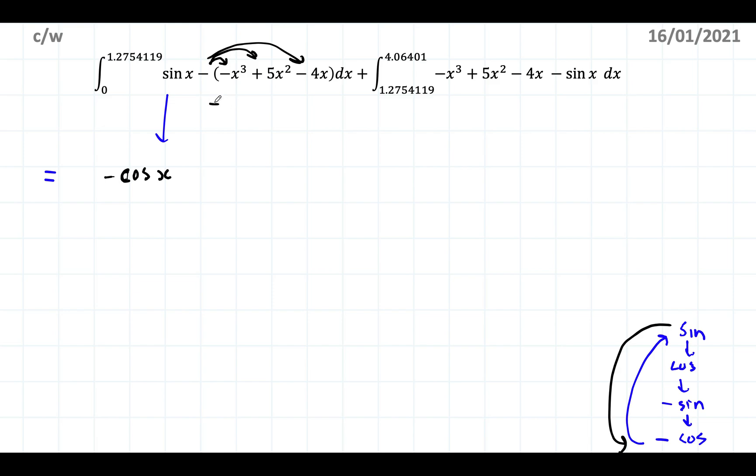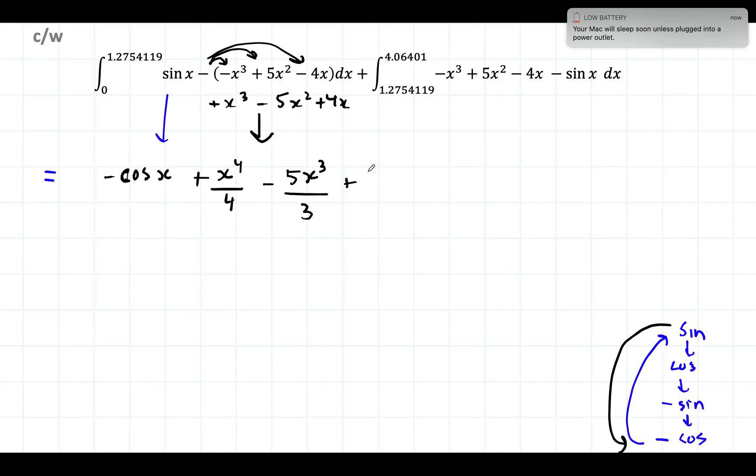And then this, I purposely picked the first one because I need to be careful about the signs. The negative will multiply out so actually the expression is going to be positive x³ - 5x² + 4x. Then I'm going to integrate this. I'm going to get x⁴/4 - 5x³/3 + 4x²/2 which is going to simplify to just 2x². So this is the expression you're going to get evaluated from 0 until 1.275 and so on.